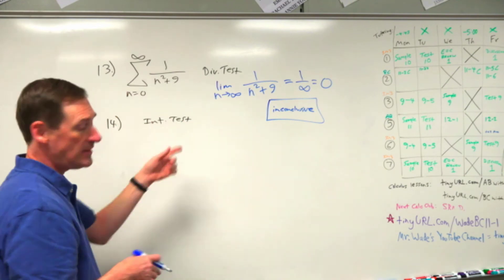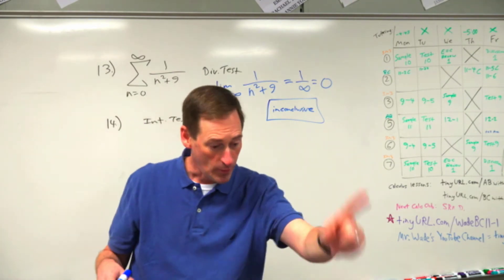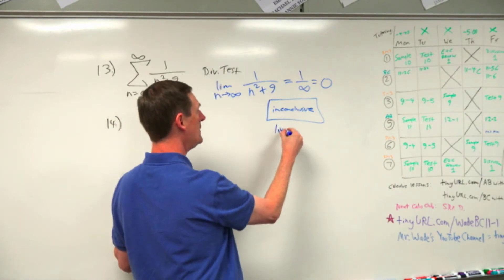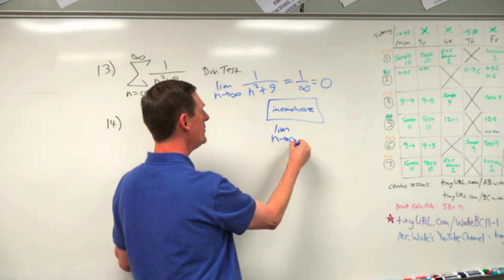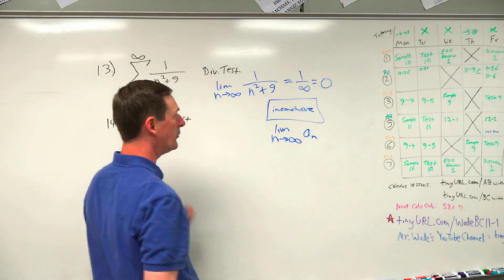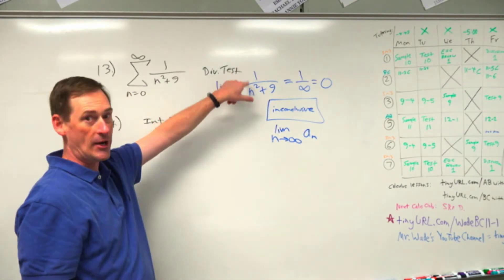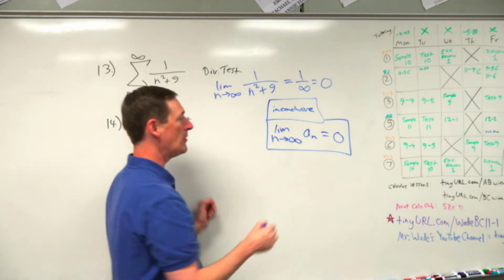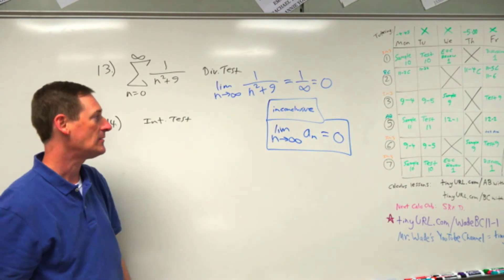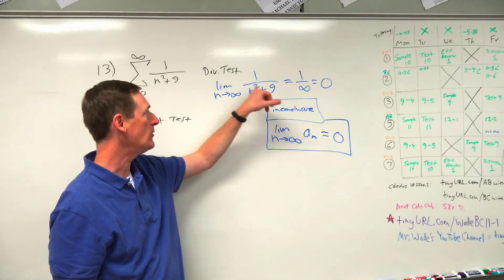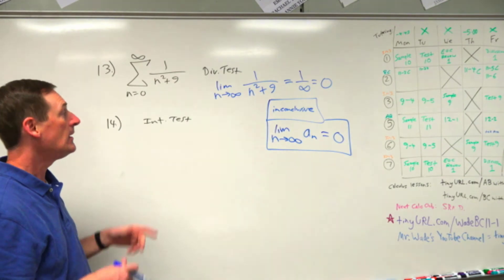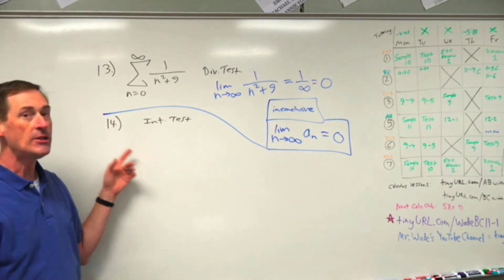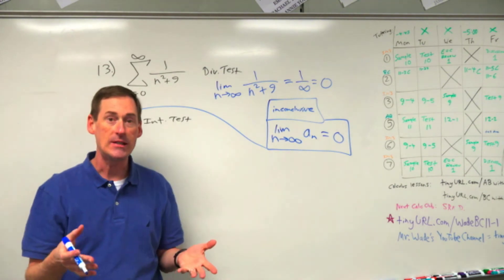In the second blank, write 'because' — show that the limit as n approaches infinity of one over n squared plus nine equals zero. That's your evidence. Put 'inconclusive' in the box. Now we do the same series with the integral test, hoping it gives more answers — and I think it can. We'll integrate from zero to infinity of one over x squared plus nine dx.